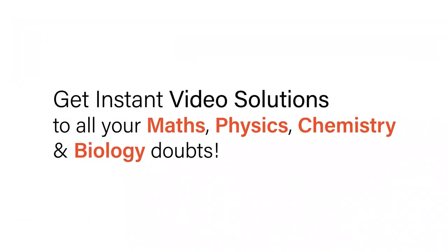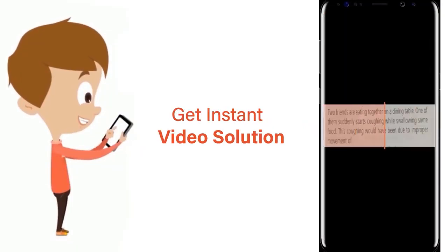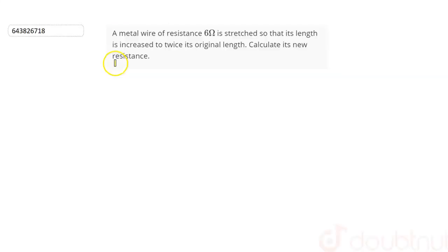With Doubtnet, get instant video solutions to all your maths, physics, chemistry, and biology doubts. Just click the image of the question, crop the question, and get instant video solution. Download Doubtnet app today. The question is: a metal wire...